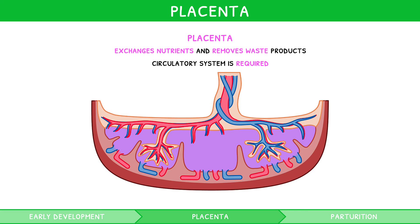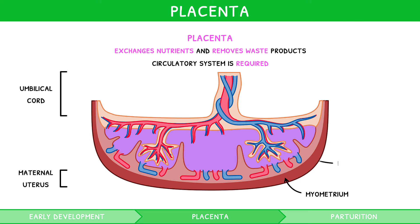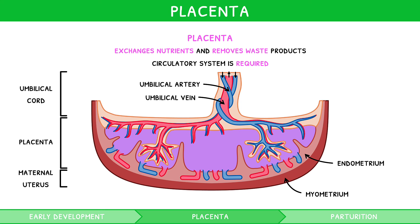On a macroscopic level, the placenta is located between two structures: the maternal uterus and the umbilical cord. The uterus consists of an outer muscular layer, the myometrium, and an inner mucinous layer, the endometrium. The umbilical cord is a tubular structure connecting the fetus and placenta, containing the umbilical artery and vein. Note these blood vessels travel the opposite way to what you would expect: the umbilical artery transports blood away from the fetus, whilst the vein transports blood towards the fetus. The disc-shaped placenta consists of several functional units, each consisting of finger-like projections of fetal tissue called placental villi.